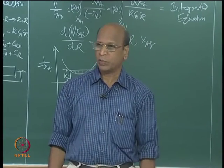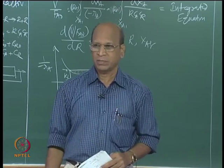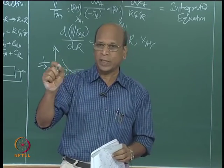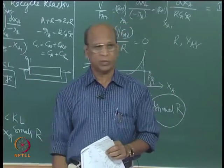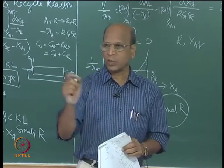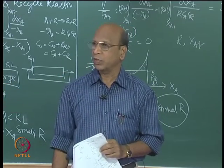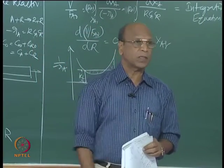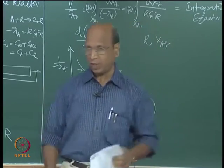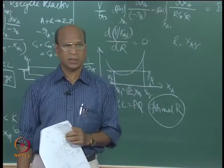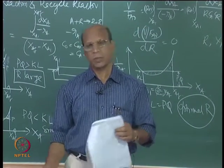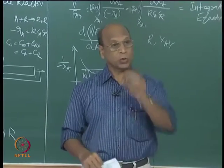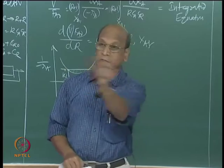Try to find that equivalence — it is very good. I may ask: N equal to 2 means equivalent to how much recycle ratio? Or N equal to 3 means what recycle ratio? And when you come to RTD, that is also replaced by the dispersion number. Dispersion number zero means plug flow reactor; dispersion number infinity means mixed flow reactor. Any intermediate dispersion number is equivalent to some R and some N.